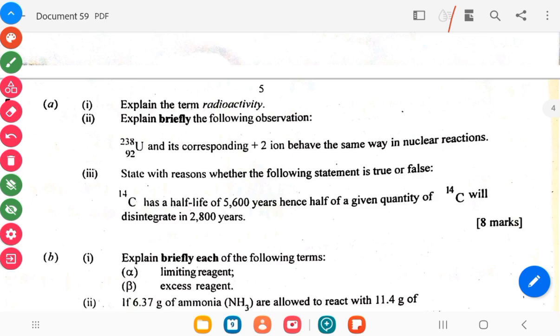So this is question 5 on radioactivity. So you are told to explain radioactivity. The next part of the question is asking explain the following observations: uranium and its corresponding class 2 ion behave the same way in nuclear reactions. State with reasons whether the following statement is true or false.